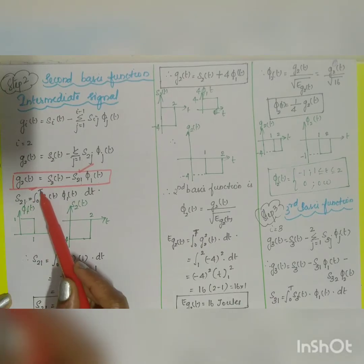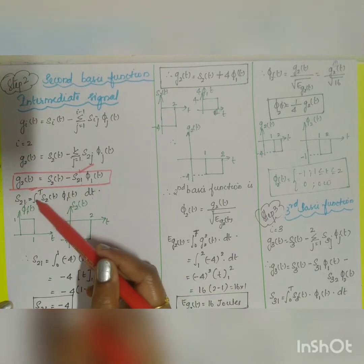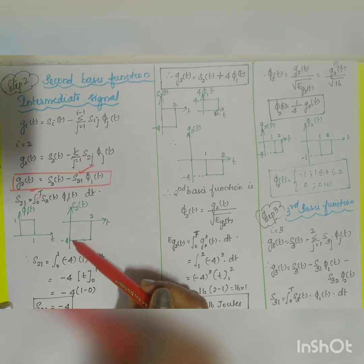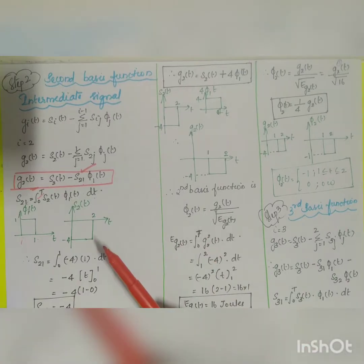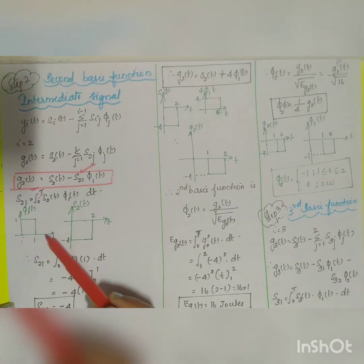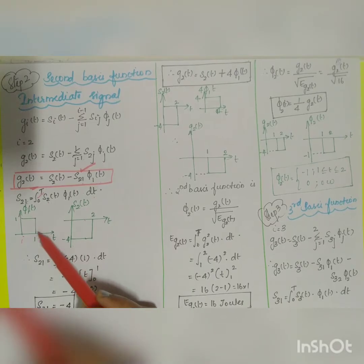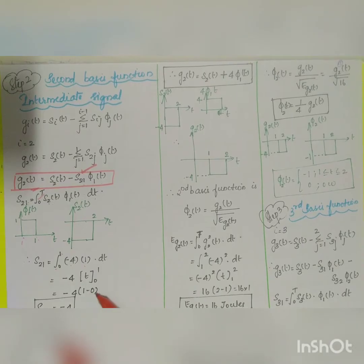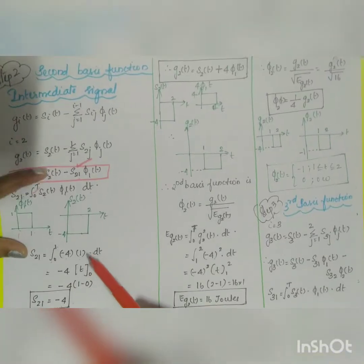To find s21, we identify the common time interval of s2(t) (0 to 2) and φ1(t) (0 to 1), which is 0 to 1. So s21 = ∫₀¹ s2(t)·φ1(t) dt = ∫₀¹ (−4)(1) dt = −4·(1−0) = −4.